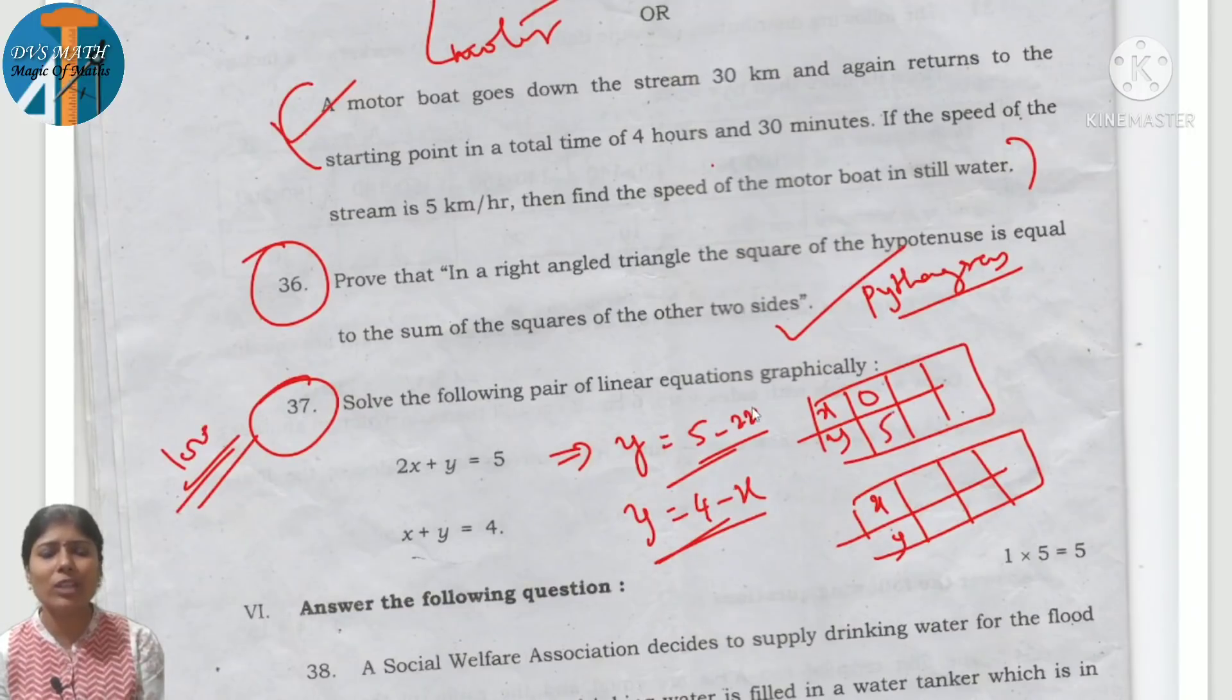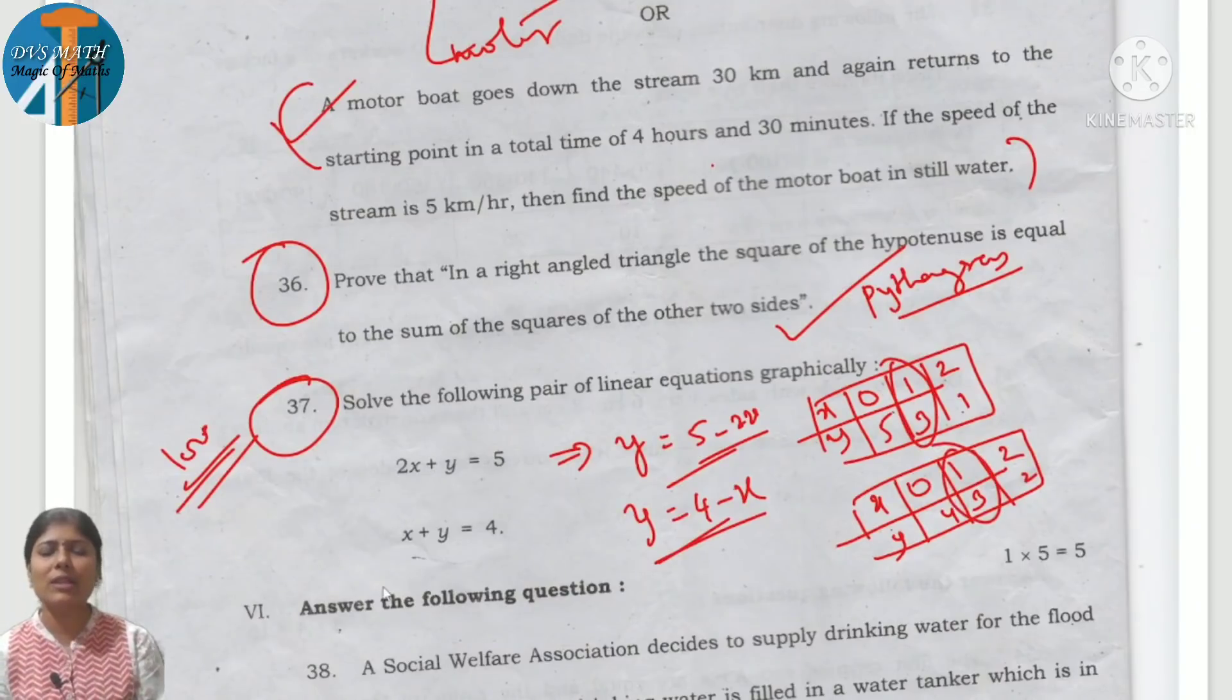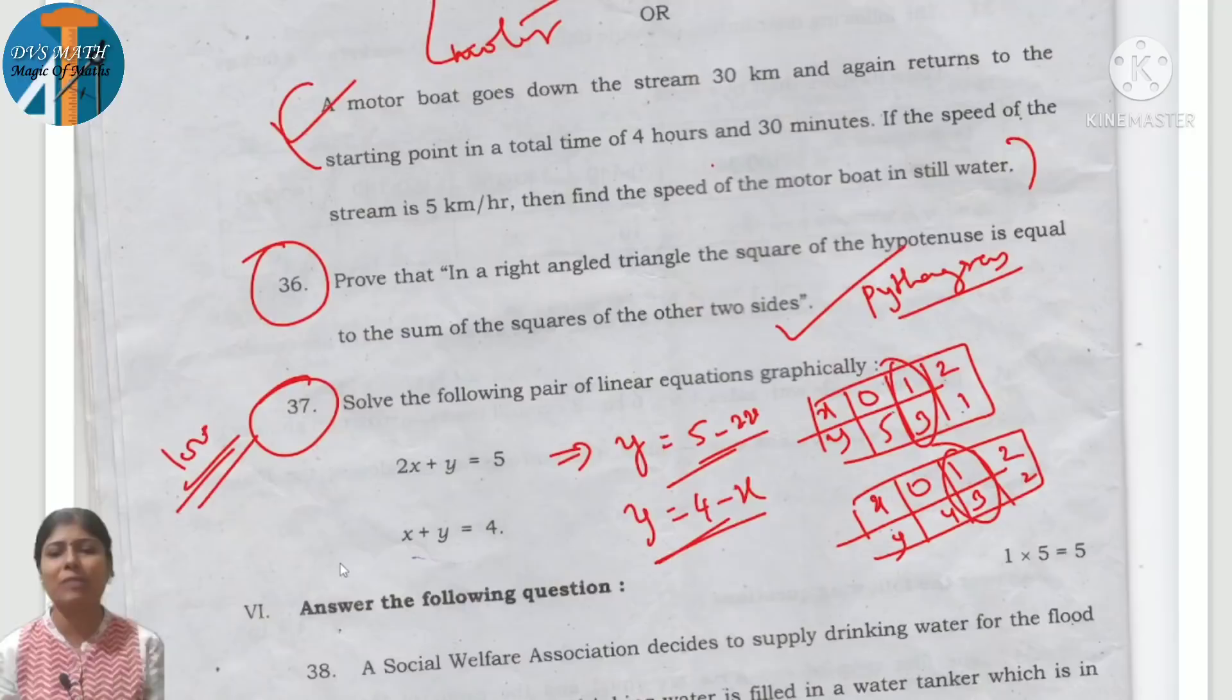Next one: if it is 0, 4 comes. 1 gives 3. 2: 4 minus 2 is 2. Observe: both have 1,3. They intersect at 1,3. Is it clear?